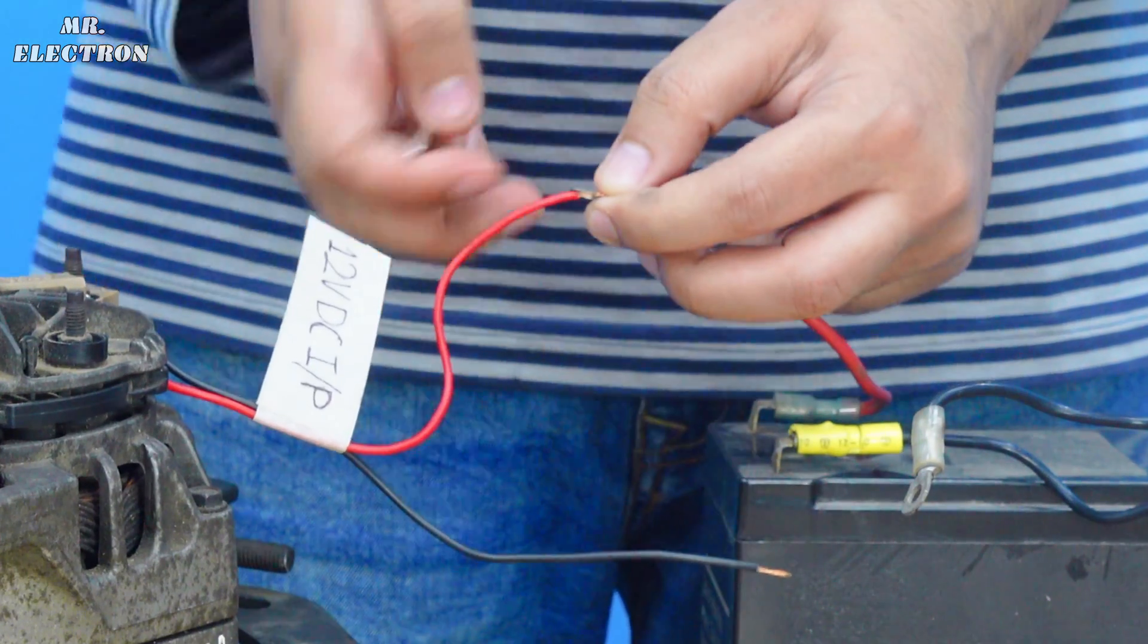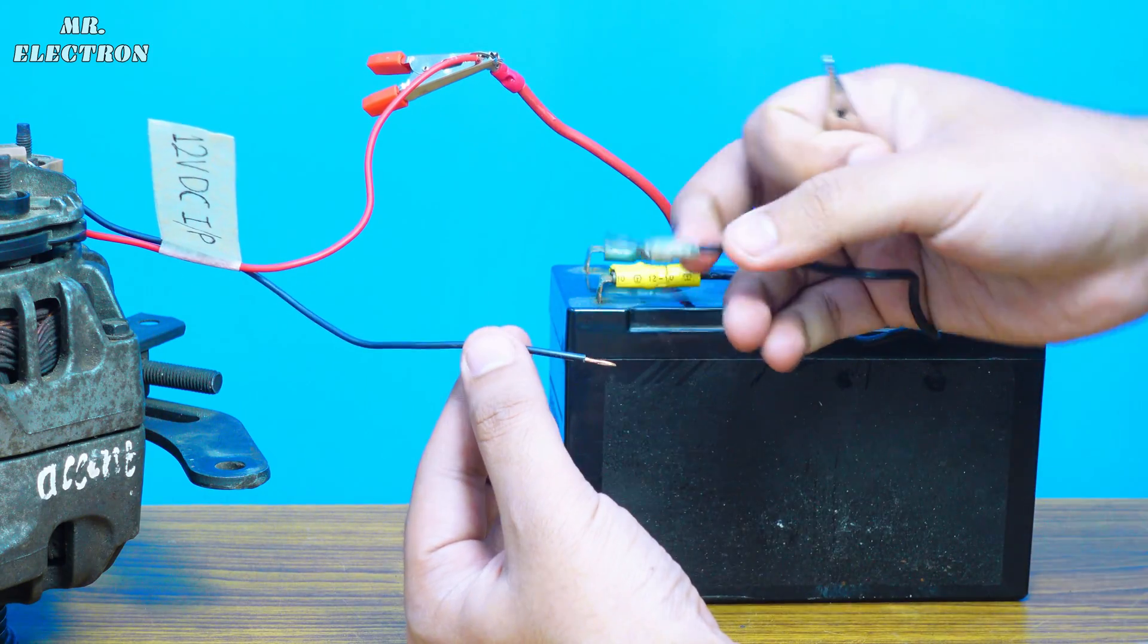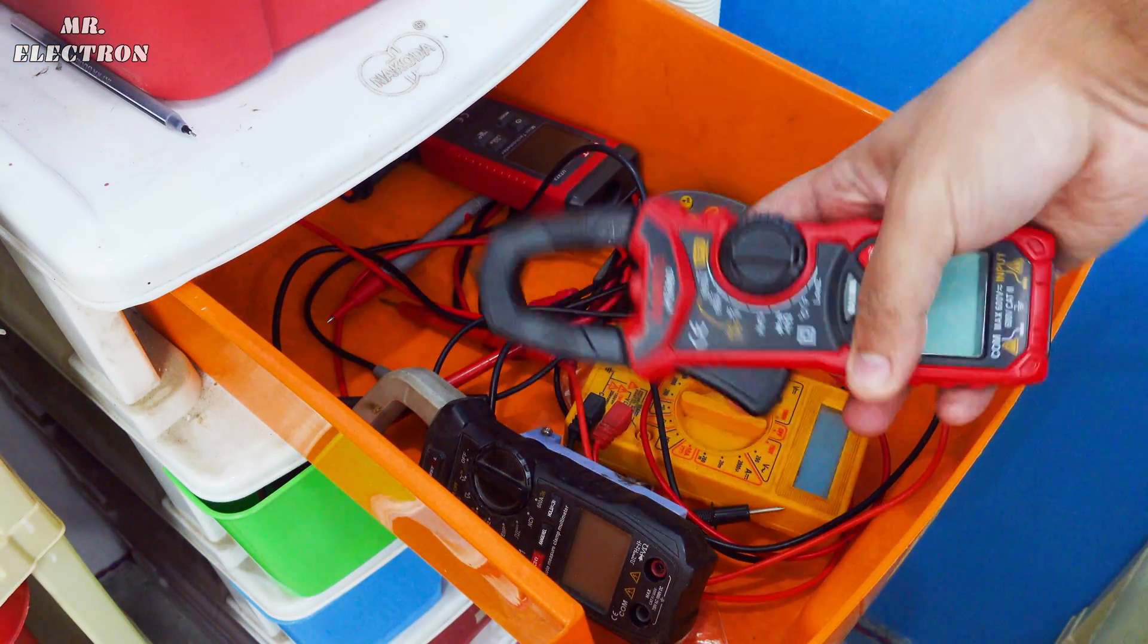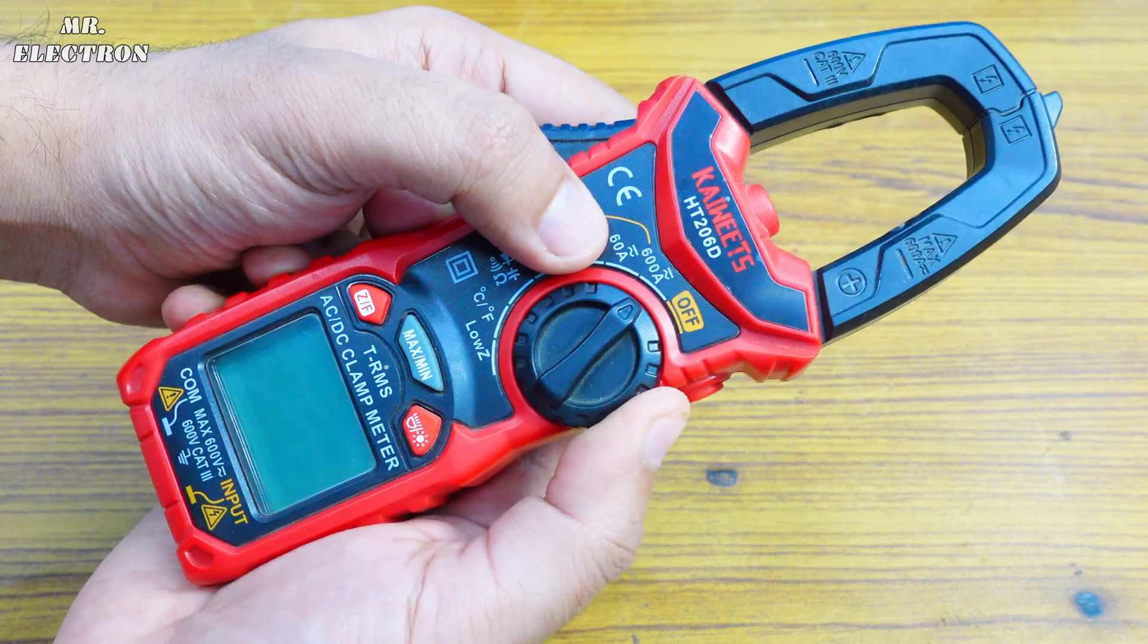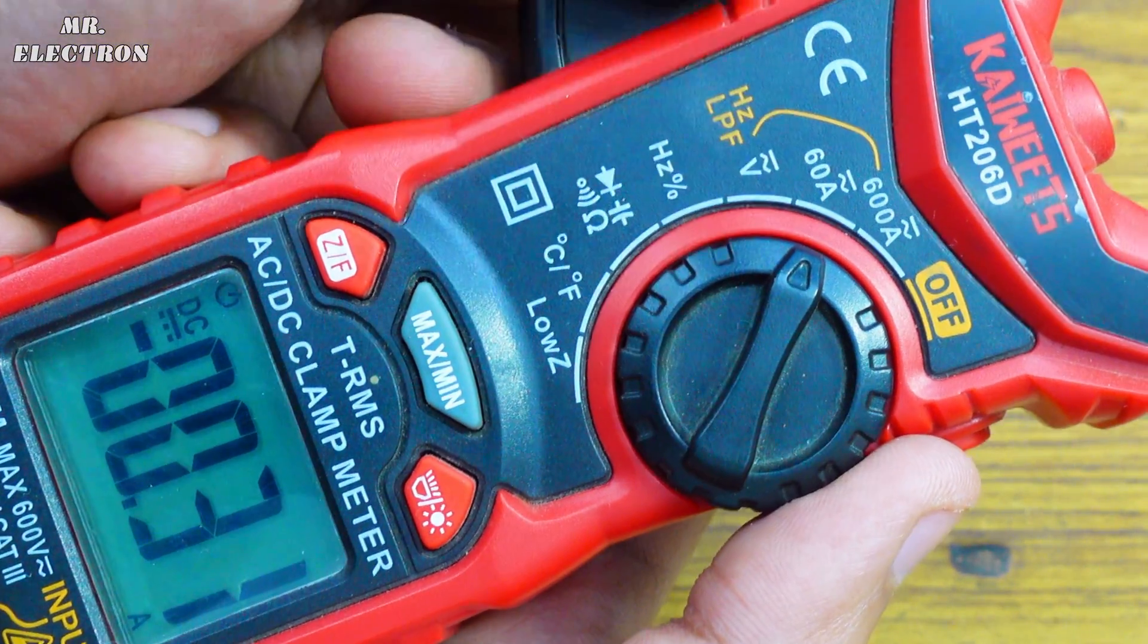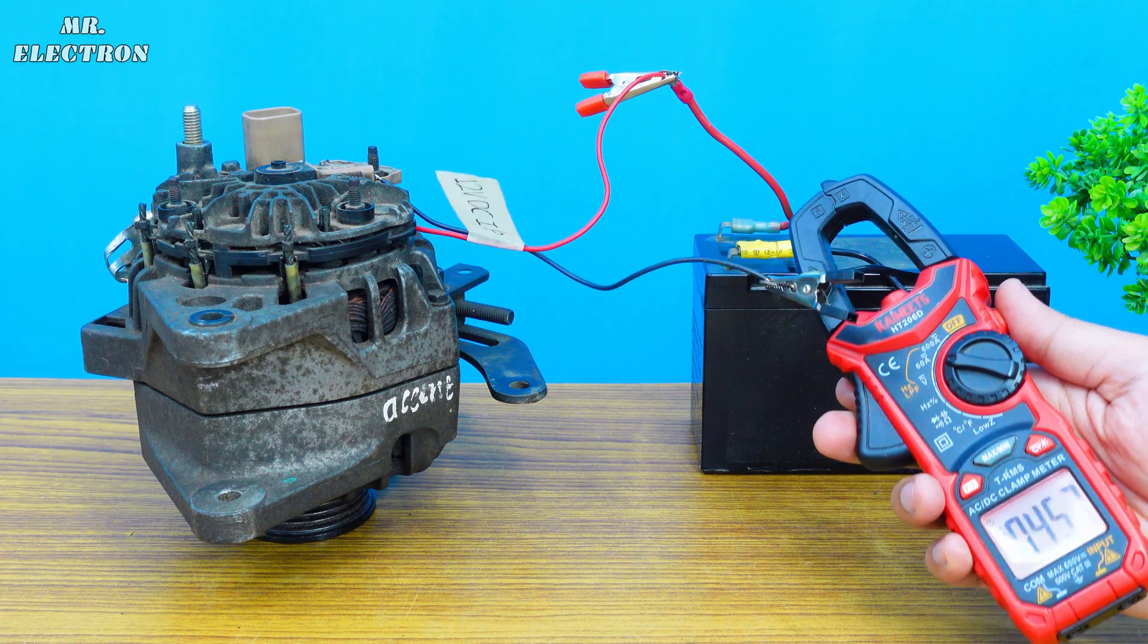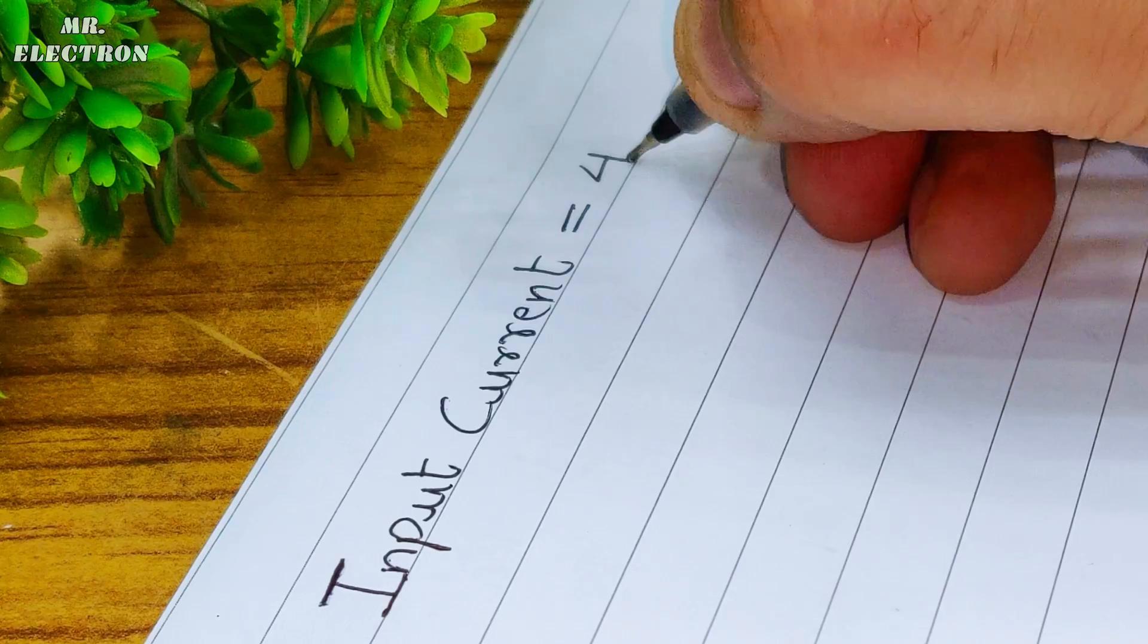Take the 12 volts battery and connect the red wire from the alternator to the positive of the battery. Similarly, the black wire to the negative of the battery. Next, take a DC clamp meter and set it to the lowest DC current measurement mode, which is 60 amperes in my case.